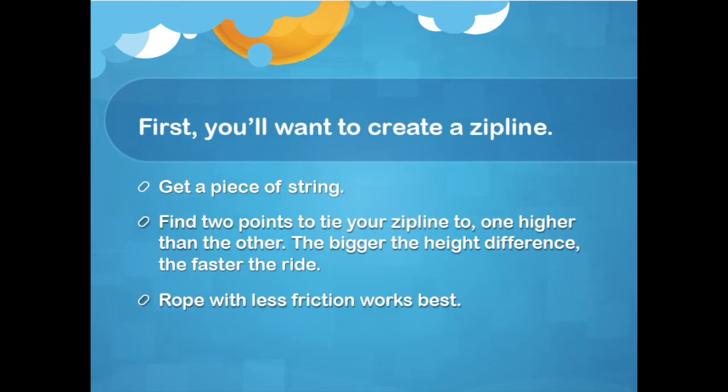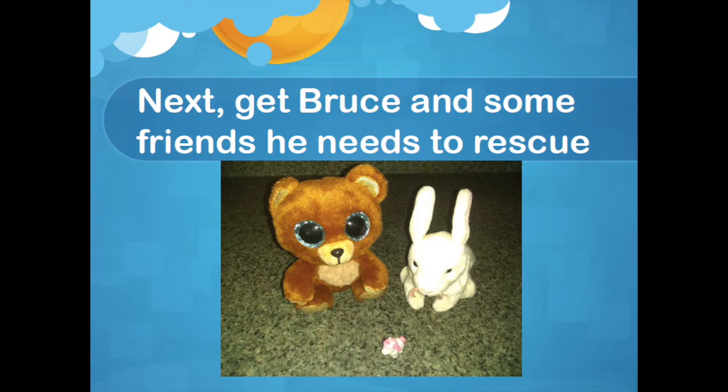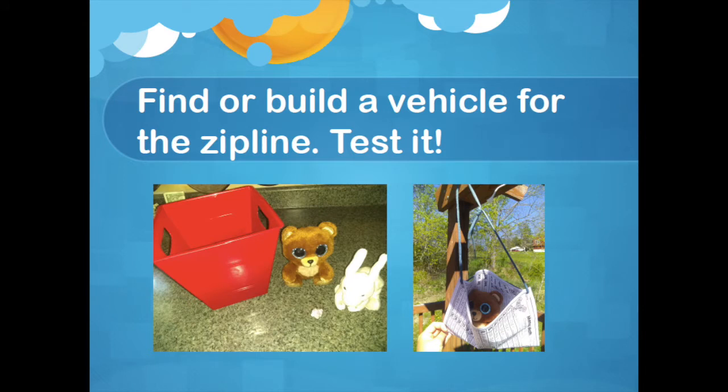First you'll want to create your zipline. Get a piece of string and find two points to tie your zipline to, one higher than the other. The bigger the height difference, the faster the ride, and rope with less friction will work best. Next, get Bruce and some friends he needs to rescue. It's okay if they're not a bear, a bunny, and a mouse — mine happens to be a bear, a bunny, and a unicorn. Just bring what you have. Find or build a vehicle for the zipline and then test it.